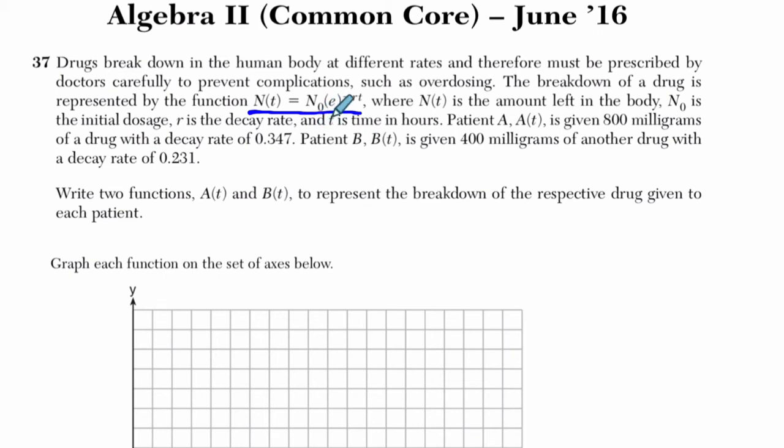You plug in zero for T, you have E to the zero, essentially. And that's just one. And so if you plug in zero, the start, all that's left is you have n sub zero times one. This would just be one. And you just have n sub zero. That's your beginning part. So I know a lot about this already before I'm even starting. And then they start defining the variables. N of T is the amount left in the body. N sub zero is the initial dosage. We talked about that. R is the decay rate. And T is the time in hours.